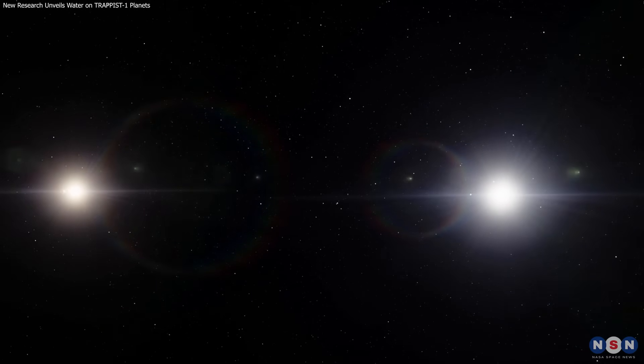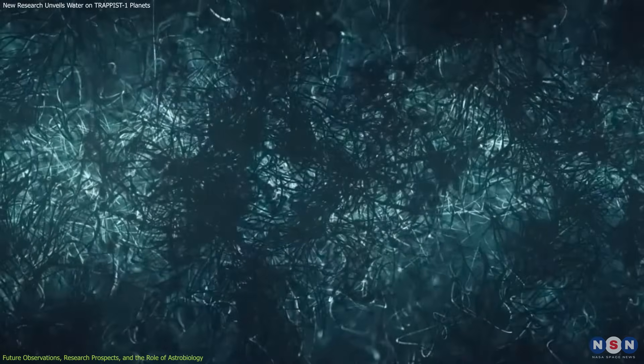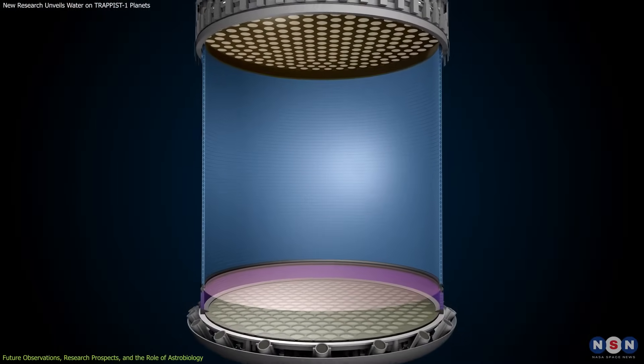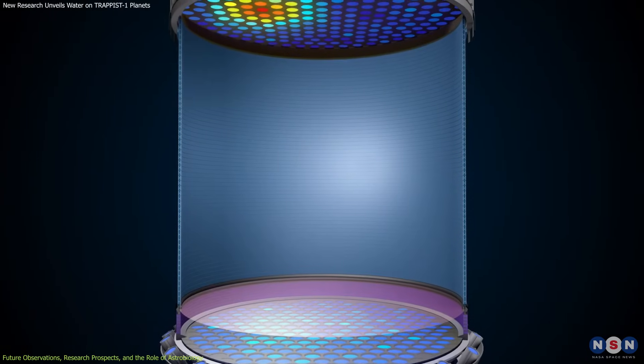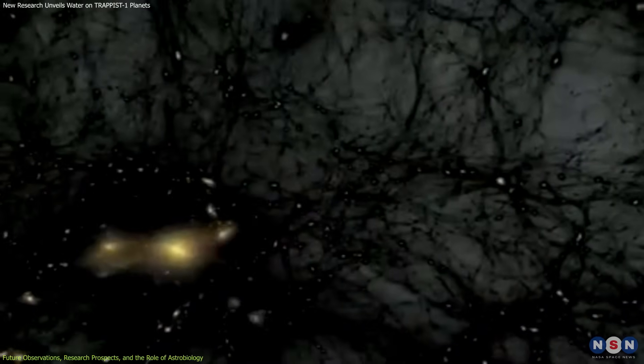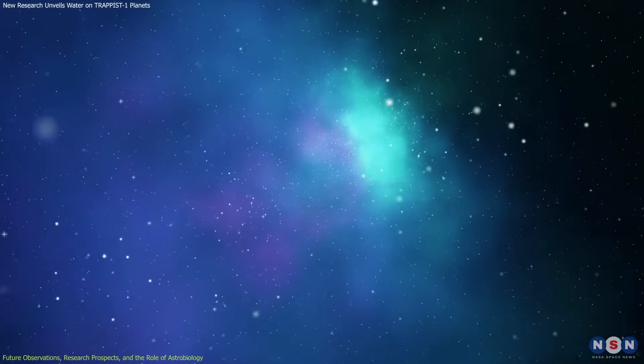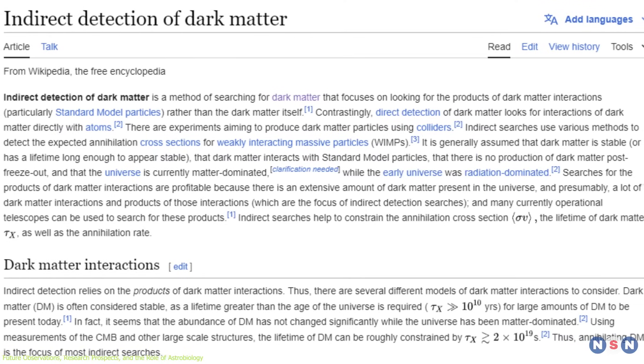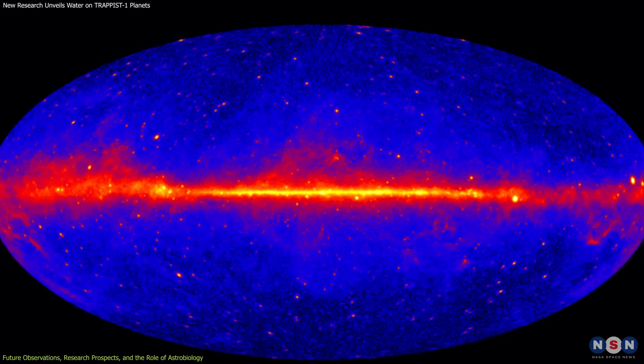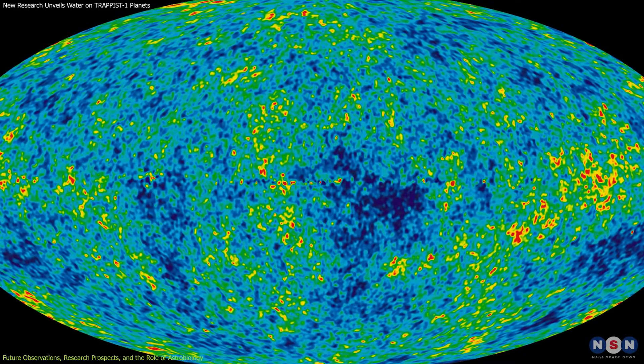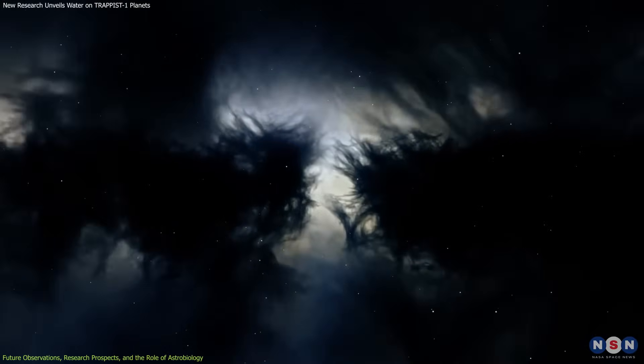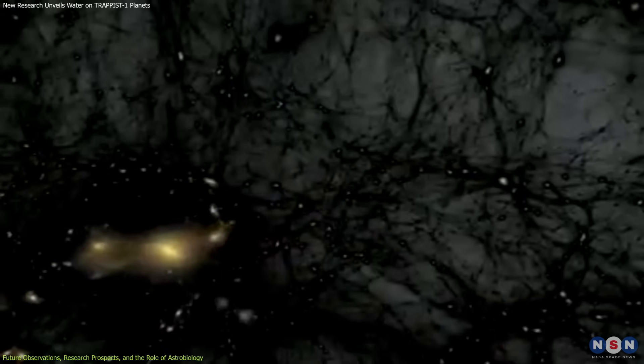Beyond the binary star systems, the quest to uncover dark matter encompasses a range of detection strategies. Underground detectors, for instance, aim to capture dark matter particles directly by shielding experiments from cosmic rays and other background noise, hoping to observe the rare interactions between dark matter and regular matter. On the other hand, indirect detection methods focus on the byproducts of dark matter interactions or decay, such as gamma rays or anomalies in cosmic microwave background radiation. These methods scan the cosmos on a grand scale, linking dark matter's macroscopic effects with its microscopic properties.